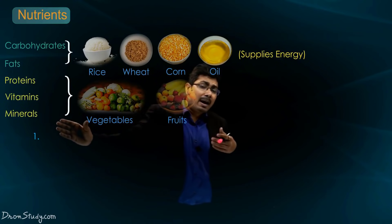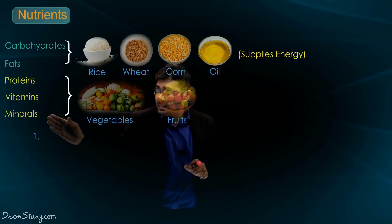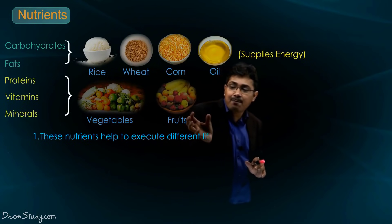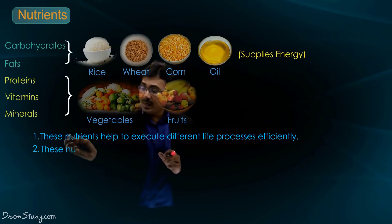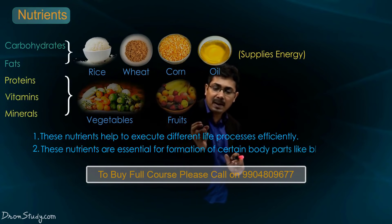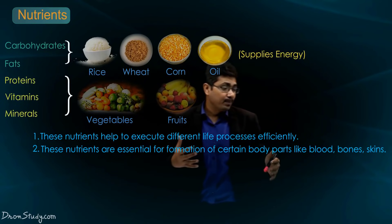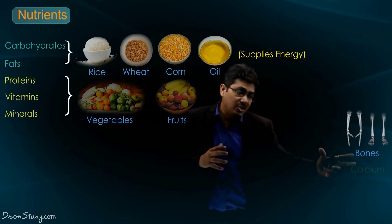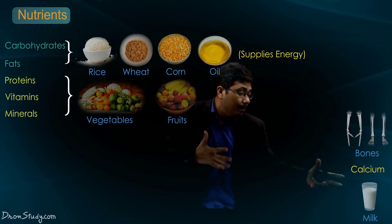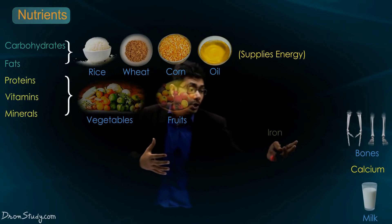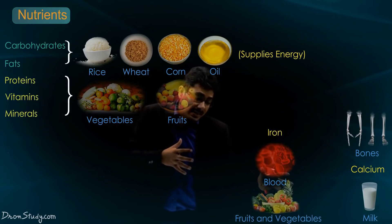These nutrients help to execute different life processes efficiently. These nutrients are also essential for formation of certain body parts like blood, bones, skin. For example, for bones we need calcium - calcium is a type of mineral. That is why from birth you will drink milk, which is a good source of calcium. Iron is also a mineral which is responsible for blood formation, and is generally found in a lot of fruits and vegetables, especially beetroot.